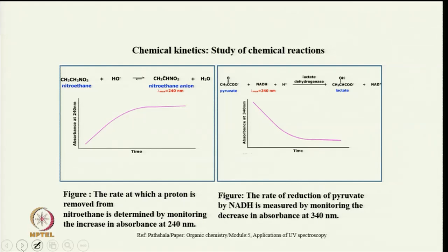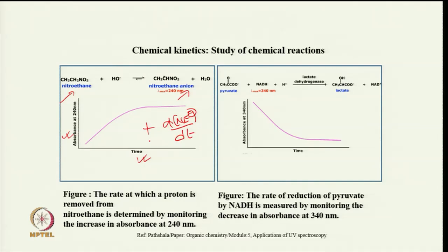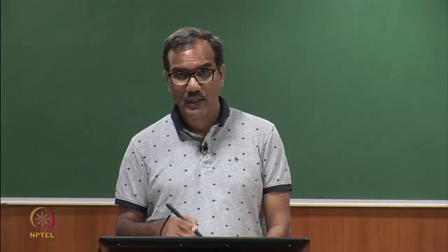Here is one example where UV visible spectroscopy is used to study a chemical reaction. Nitroethylene is converted into nitroethylene anion, which absorbs at 240 nm. We can look at absorbance at 240 nm with respect to time to track the progress of the reaction and calculate d[nitroethylene anion]/dt.